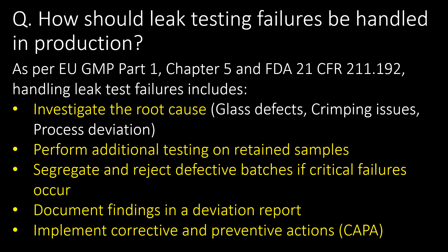How should leak testing failures be handled in production? As per EU GMP Part 1 Chapter 5 and FDA 21 CFR 211.192, handling of leak test failures includes: investigation of the root cause, performing additional testing on retained samples, segregation and rejection of defective batches if a critical failure occurs, documentation of findings in a deviation report, and implementation of corrective and preventive actions (CAPA).